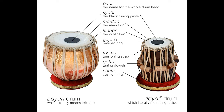Baya: left drum. Pudi: head — similar to the dayan but larger, made of goatskin with a central black spot, sayahi. Sayahi: ink spot — the central black spot that helps produce deep, resonant tones. Kinner: edge — the outer ring of the pudi, used for producing higher-pitched sounds.